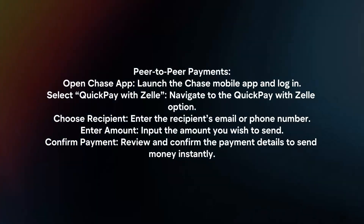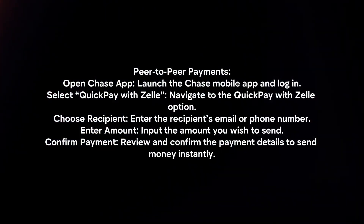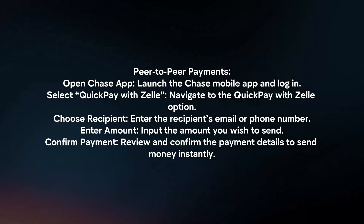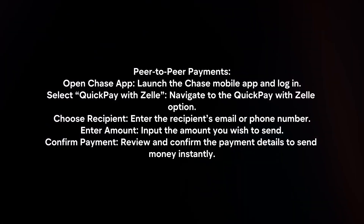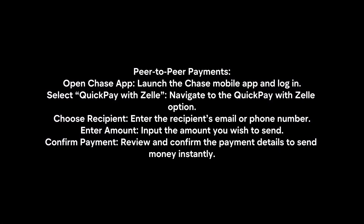For peer-to-peer payments: Open the Chase mobile app and login. Navigate to Quick Pay with Zelle. Enter the recipient's email or phone number, input the amount you wish to send, then review and confirm the payment details to send money instantly.